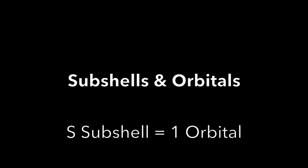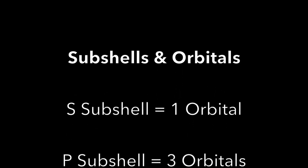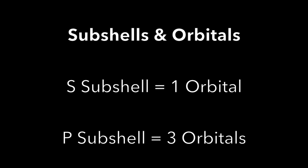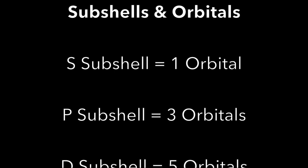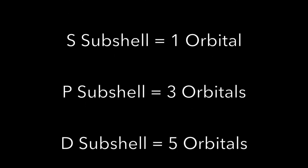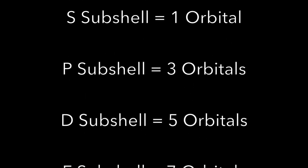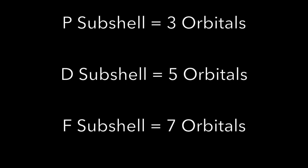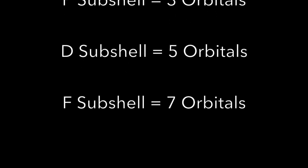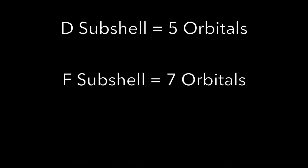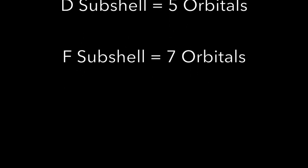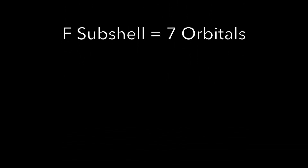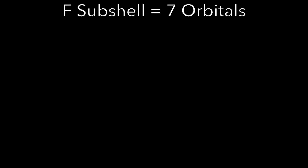The S subshell has only one orbital. The P subshell has three orbitals. The D subshell has five orbitals. And the F subshell has seven orbitals.